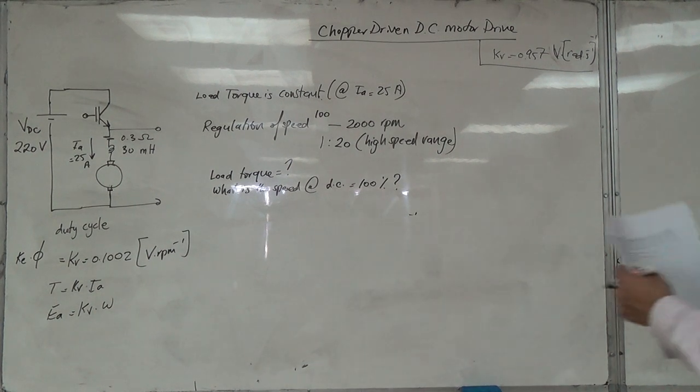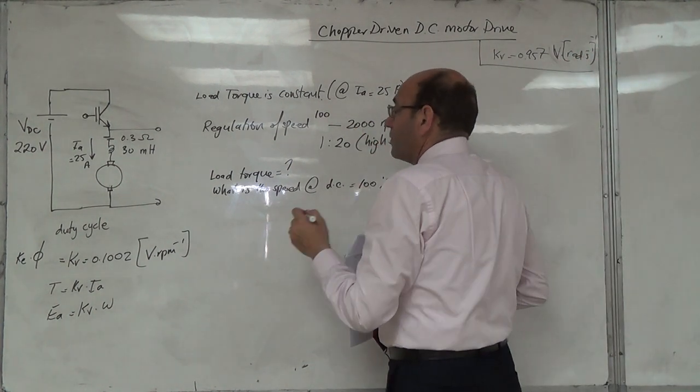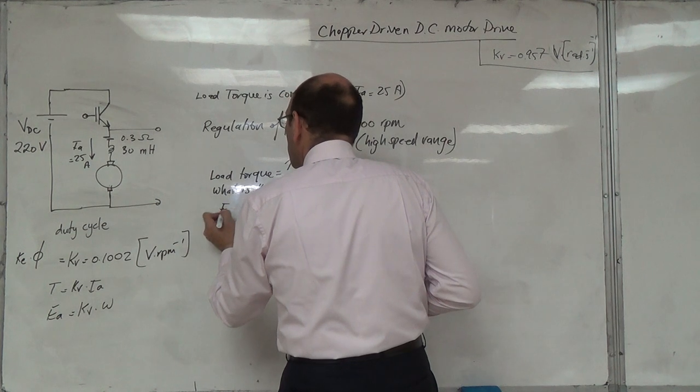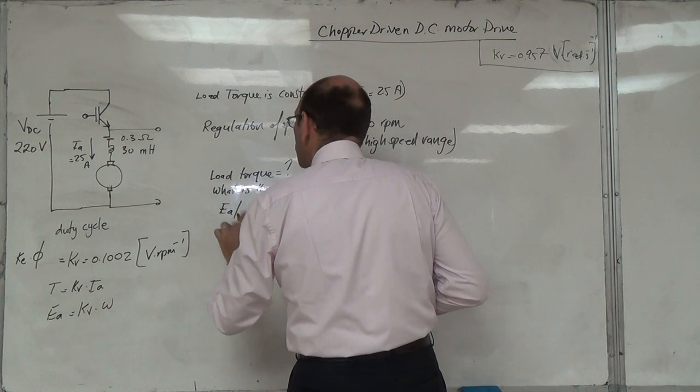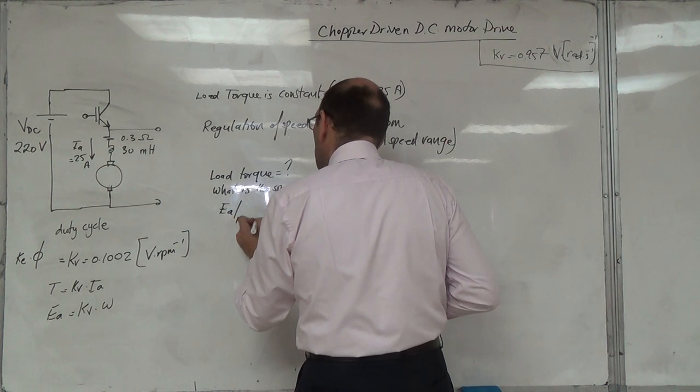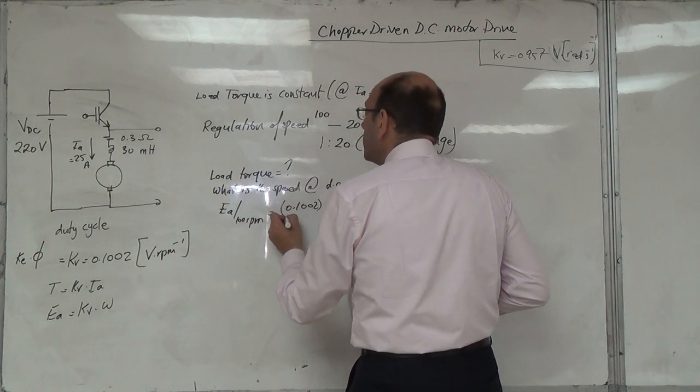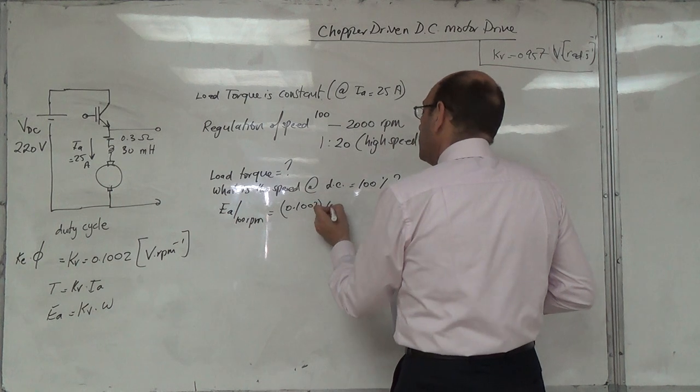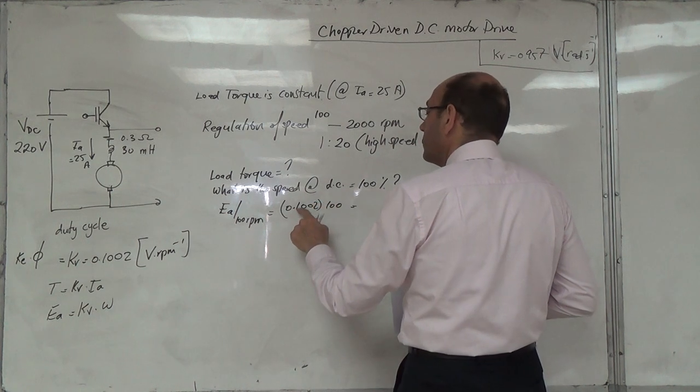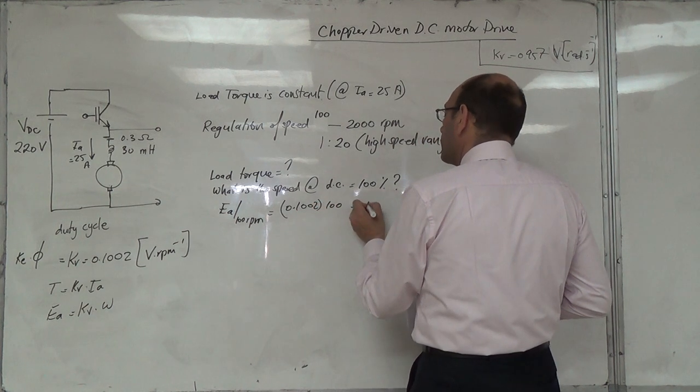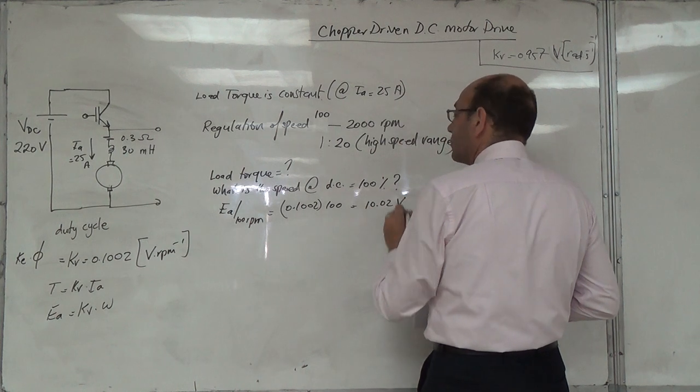Regulation-less speed, 1000 RPM and 2000 RPM. So E at 1000 RPM, 0.1002, what does it mean? It is 10.02 volts.